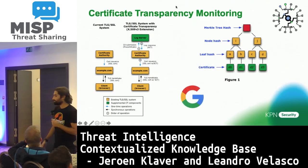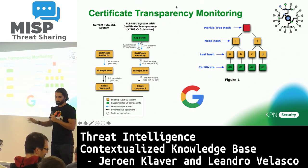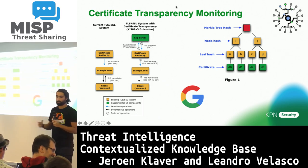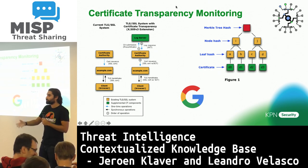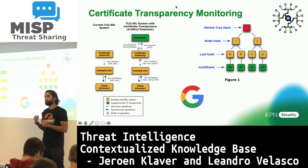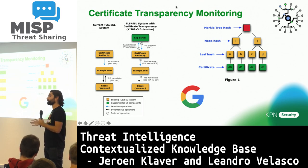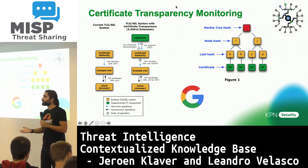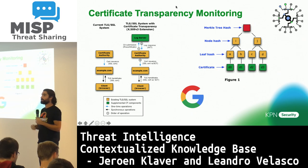Then we go to our second big input source: certificate transparency. I don't know if you're aware of this project, but basically it's an initiative by Google to try to fix the certificate authority SSL/TLS structure. What happened a couple of years ago with DigiNotar really changed many people's minds — we cannot just trust the system, we need to monitor it, we need some auditing there. So what Google proposed is: what if we have a repository where all certificates issued in the world are also pushed, so anybody can look at them and spot strange things — like, why is DigiNotar issuing a certificate for Google?